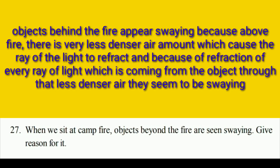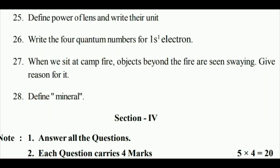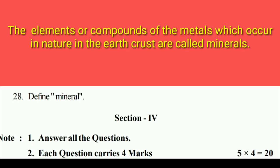When we sit at campfire, objects beyond the fire are seen swaying, give reasons for it. Objects behind the fire appear swaying because above fire there is very less density air which causes the rays of light to refract. Define mineral: The elements or compounds of the metals which occur in nature in the earth's crust are called minerals.